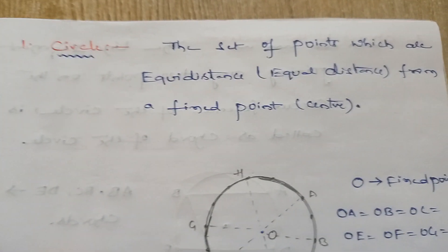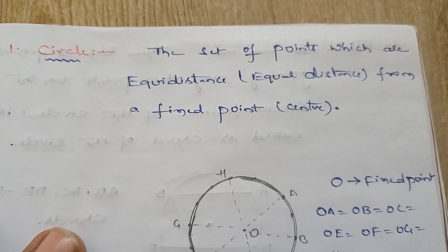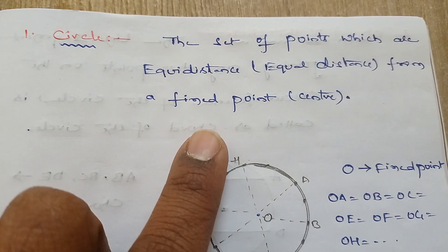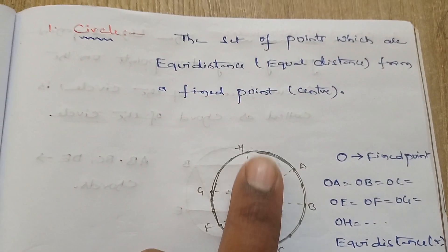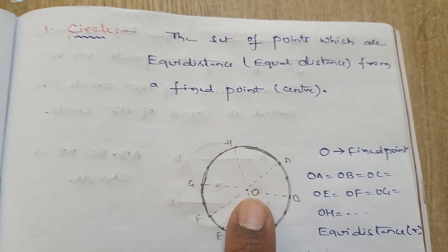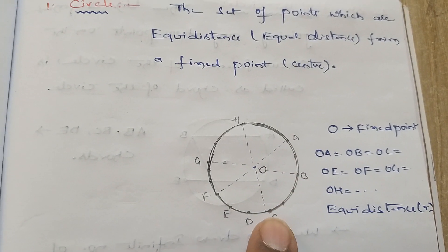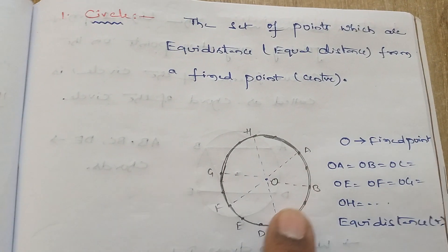What is a circle? The set of points which are equidistant, that is equal distance, from a fixed point. This is a circle where H, A, B, C, T, E, F, G are the points on the circumference of the circle.